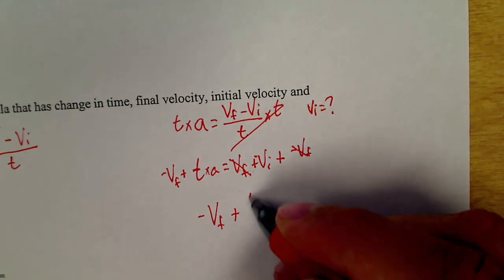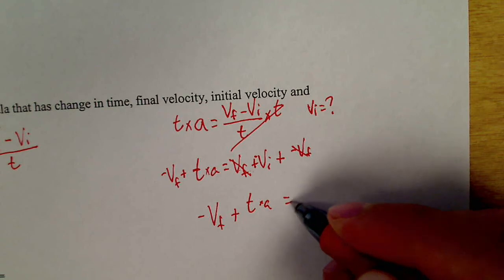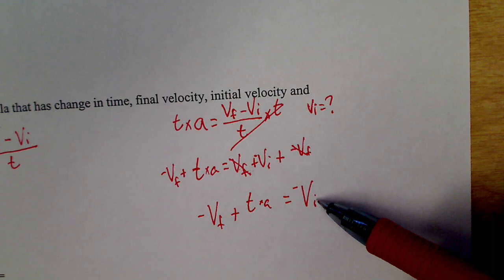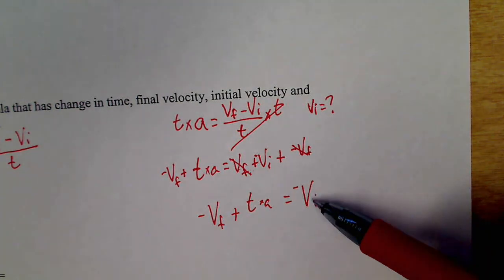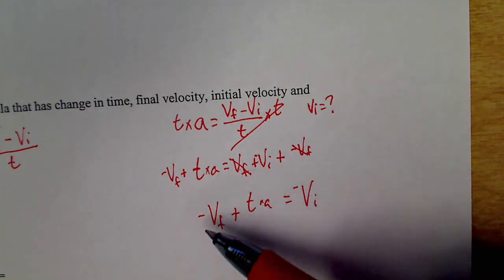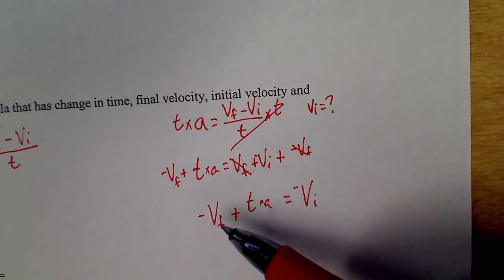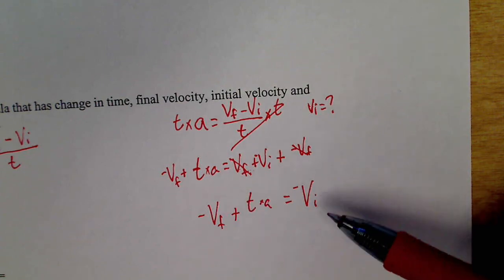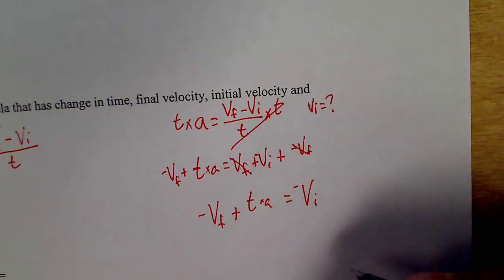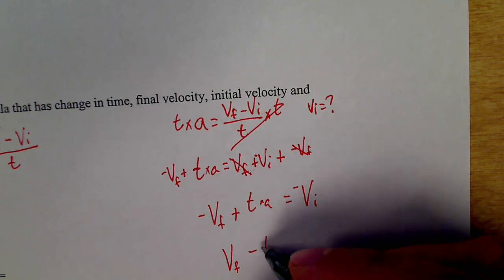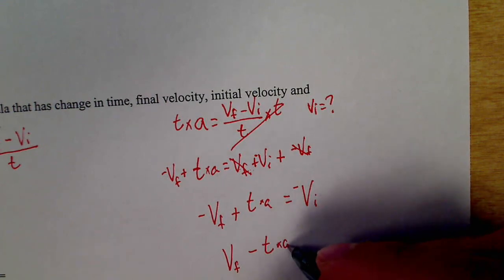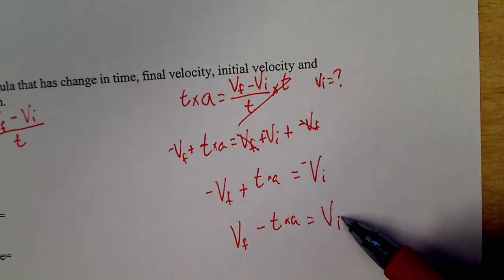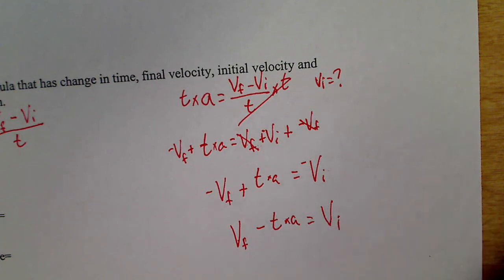Negative VF plus T times A equals negative VI. Now, the VI is kind of by itself, but not completely. Because we wanted just VI. This is negative VI. What I can do is multiply both sides by negative one. Which means that multiplied by negative one becomes positive. This thing is positive, it becomes negative. That's negative, it becomes positive. I can switch every sign as long as I do every single sign. That's my answer. What does initial velocity equal?